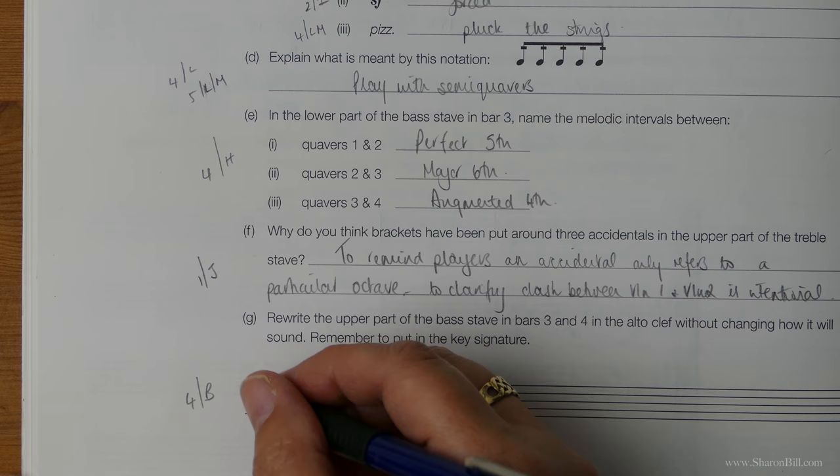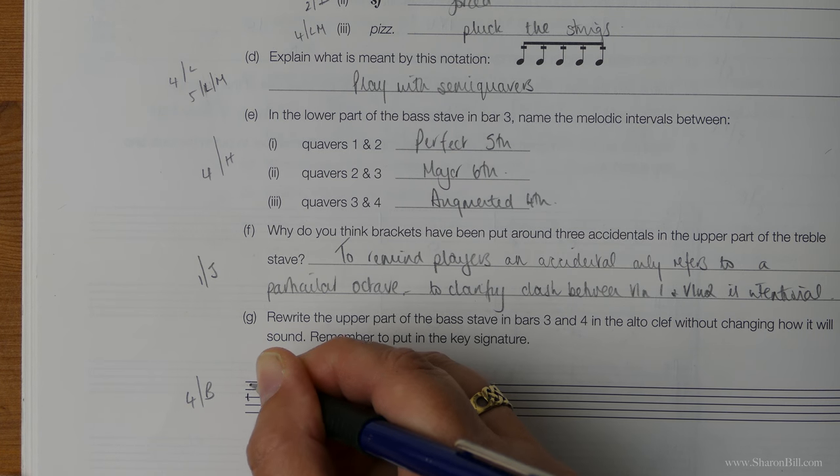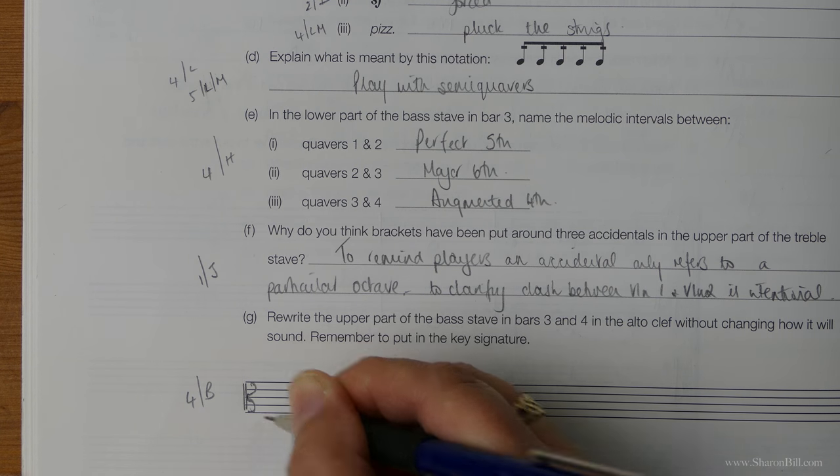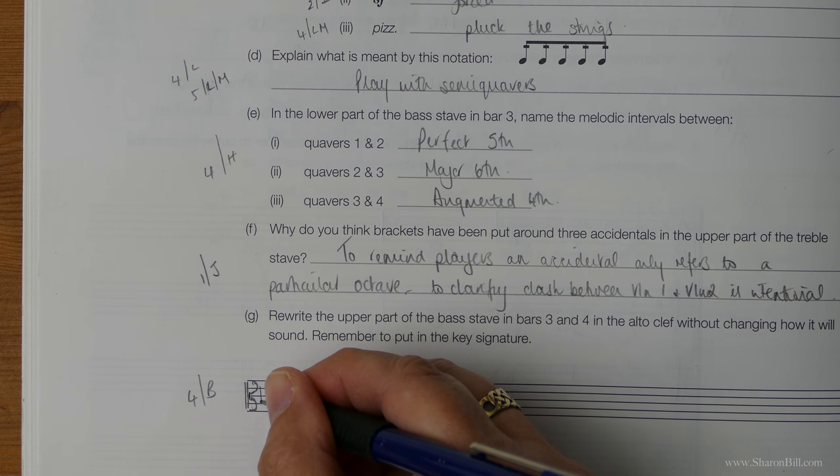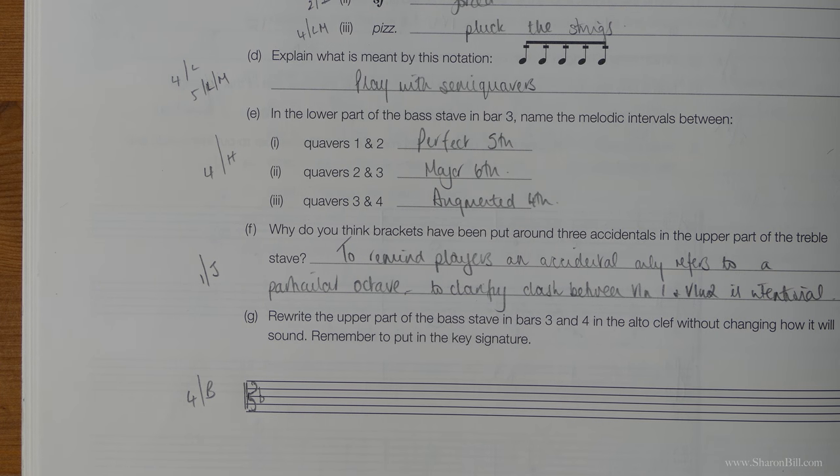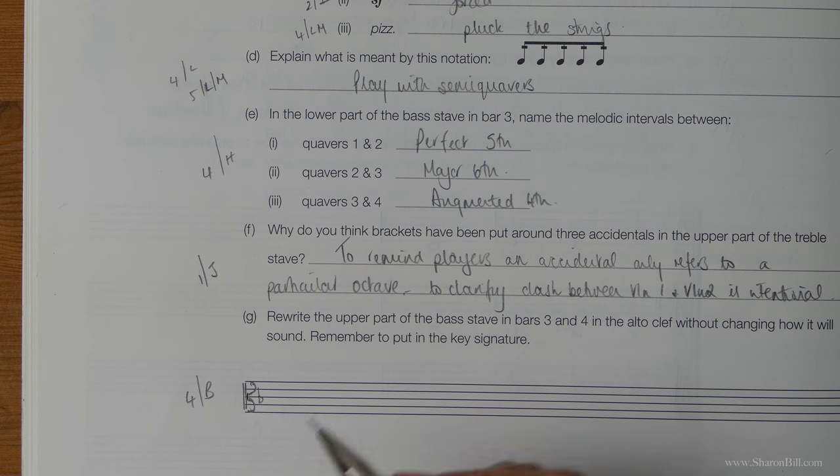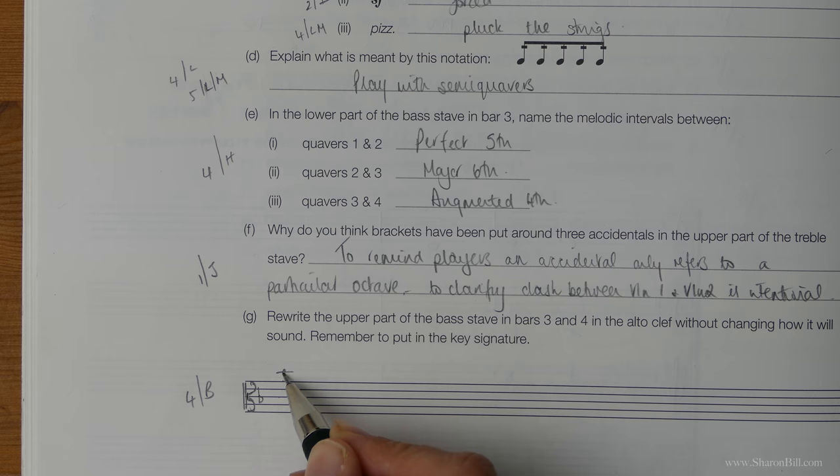So, let's just get our alto clef. The alto clef is where middle C is on this middle line. So we'll just hook around those with a double bar line. So the B flat will be placed just below the middle line in that space down. And so we need to find the B, C, E, G, B here above middle C.